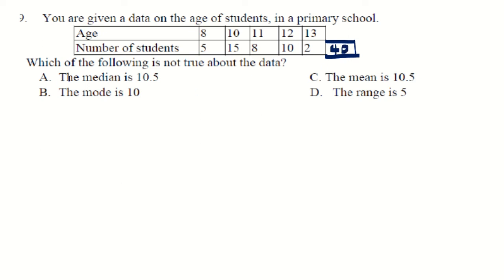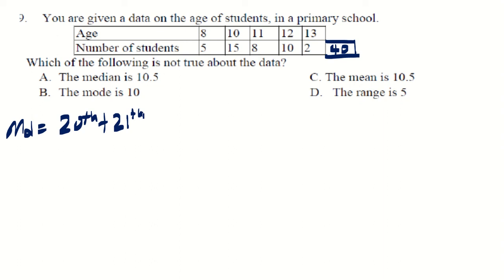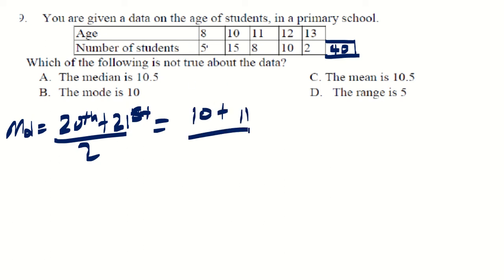The median: total n = 40 (even), so median = (20th term + 21st term) / 2. The 20th term corresponds to age 10 and the 21st term is also 11, giving (10 + 11) / 2 = 21/2 = 10.5. So the median is 10.5.